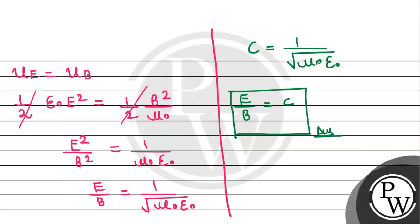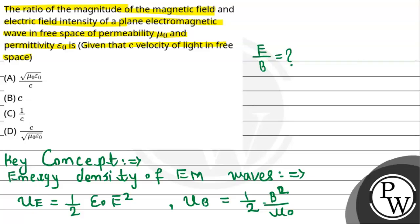And therefore, this is going to be the required answer as per the given option. E by B equals to c, so option B is correct. So this is the required solution. I hope you understand. Well, best of luck. Thank you.